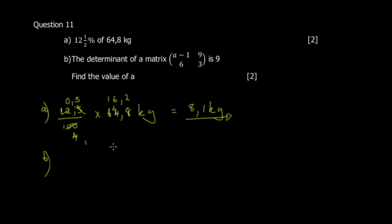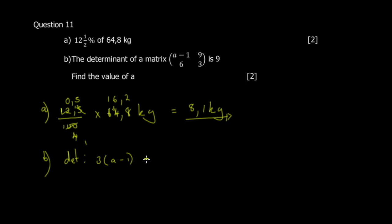For the next part, the determinant of the matrix is 9 and you're asked to find the value of a. The formula for determinant is: multiply the main diagonal and subtract the product of the other diagonal. So it becomes 3a minus 1, then minus the product 6 and 9, equal to 9.